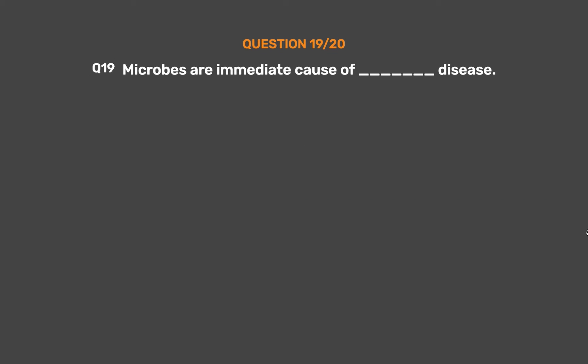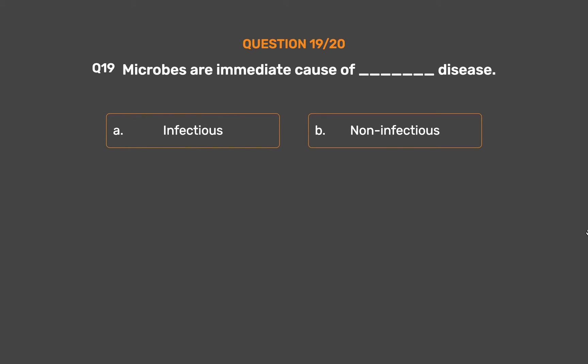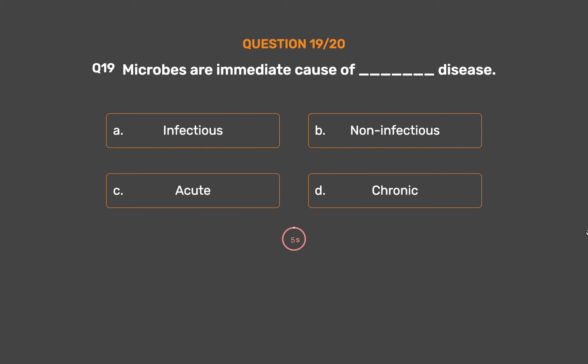Question number 19. Microbes are the immediate cause of which type of disease? Option A: Infectious. Option B: Non-infectious. Option C: Acute. Option D: Chronic.